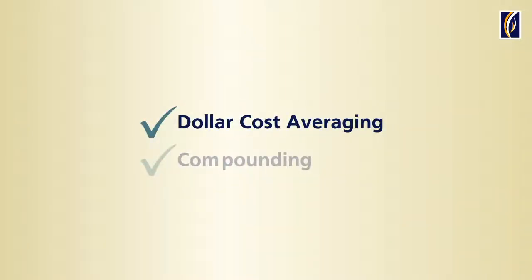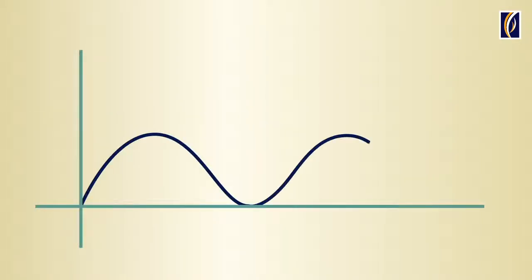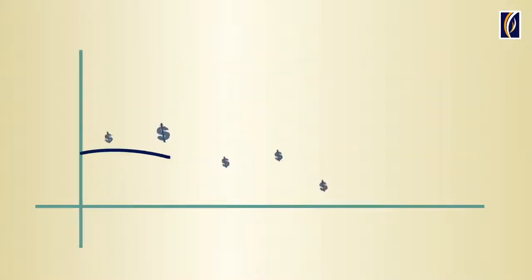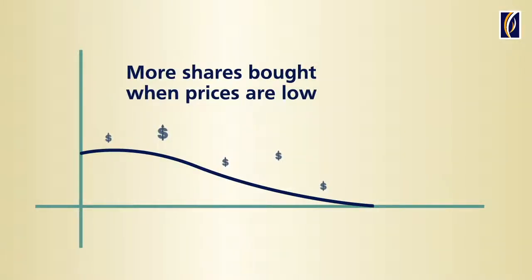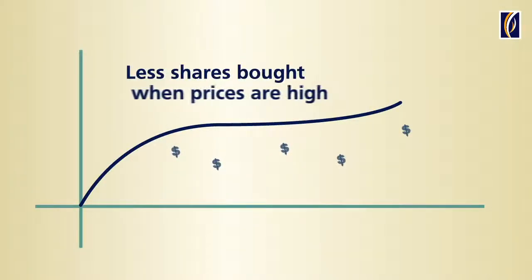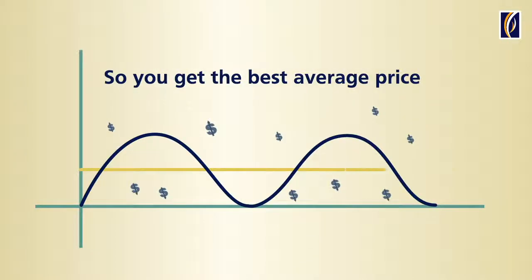Dollar Cost Averaging is a technique by which a fixed amount of money is invested regularly. More shares are bought when prices are low and less shares are bought when prices are high. So you end up with the best average price.